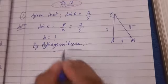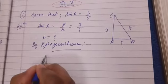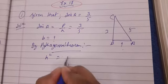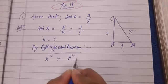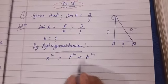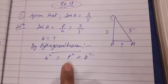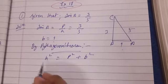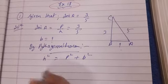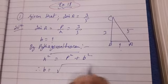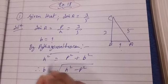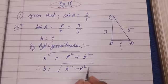We are going to find the value of b using Pythagoras theorem. Pythagoras theorem states that for a right angle triangle, the square of the hypotenuse equals the sum of perpendicular squared and base squared. We have p and h; we need to find b. Therefore, b equals under root of h squared minus p squared.